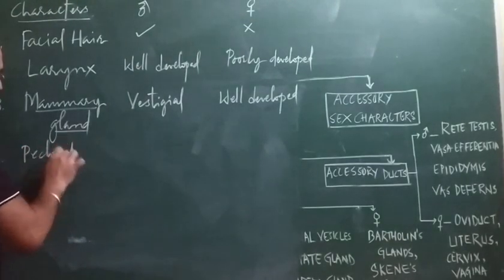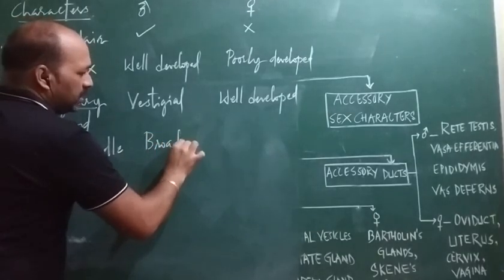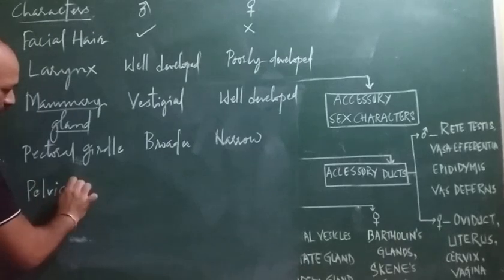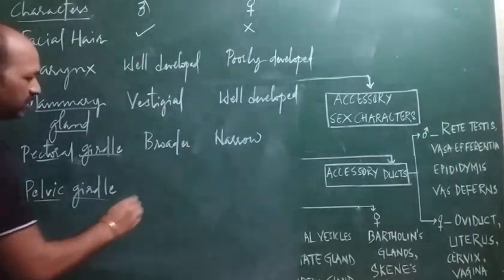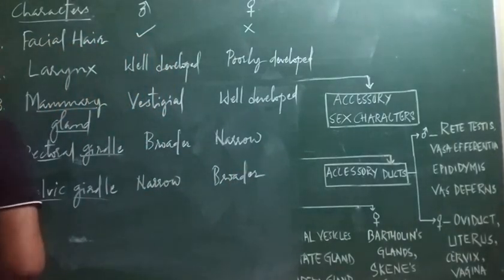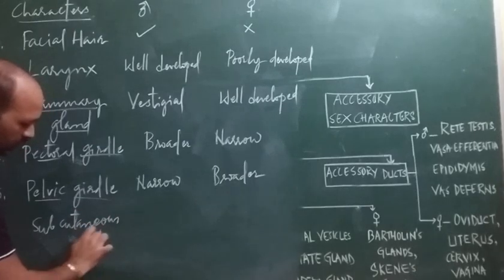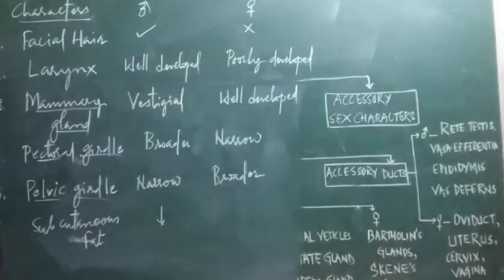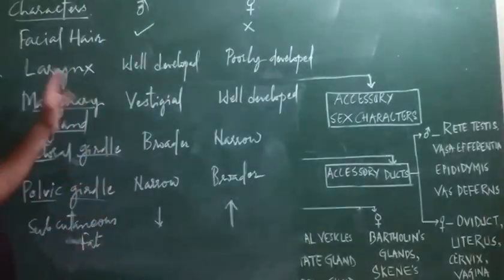The next character is the pectoral girdle, which is broader in males and narrower in females. Next is the pelvic girdle — the pectoral girdle can be referred to as the shoulder, and the pelvic girdle as the hip. The pelvic girdle is narrow in males and broader in females. Finally, deposition of subcutaneous fat is less accumulated in males and more accumulated in females. These are some of the accessory sex characters by which we can differentiate males and females.